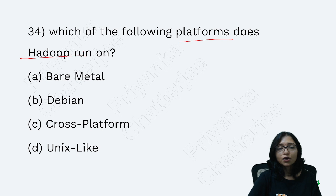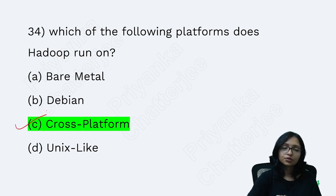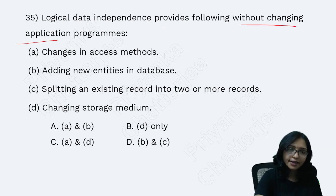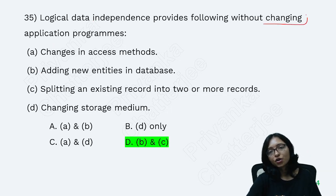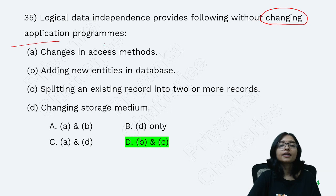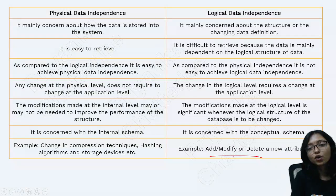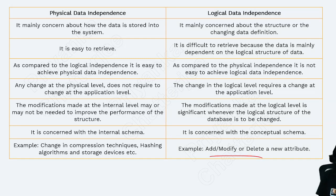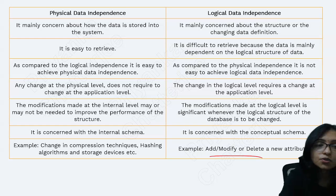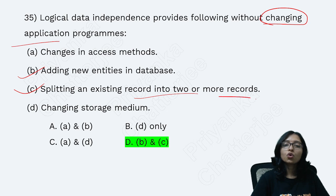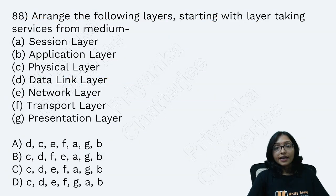Hadoop runs on a cross-platform environment. Logical data independence means providing changes without changing the application — for example, adding, modifying, or deleting attributes. Physical data independence focuses on changing compression techniques, hashing algorithms, and storage devices. Remember: logical data independence relates to adding new entities and splitting existing records into two or more records.